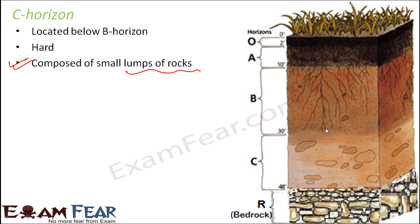At the C horizon layer, minimum addition and minimum losses take place. As mentioned, there are losses from the A horizon due to floods or wind, and sometimes the B horizon gets exposed and faces similar losses — but the chances of losses and additions in B horizon are still lesser. When you talk about C horizon, it is quite deep inside and moreover it is so hard, so the chances of any addition or losses to this horizon are very minimum.